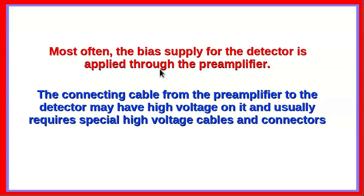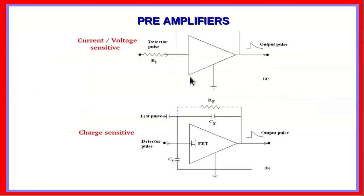Often the bias supply for the detector is also applied through the pre-amplifier, with a separate connector for this purpose. The connecting cable from the pre-amplifier to the detector may carry high voltage, requiring special high-voltage cables and connectors. These circuit diagrams indicate the two main types of preamplifiers: the current or voltage sensitive preamplifier, which converts detector current to an output voltage pulse, and the charge sensitive preamplifier, where the output pulse is proportional to the charge collected at the detector terminals. Both use an FET input stage to reduce noise.